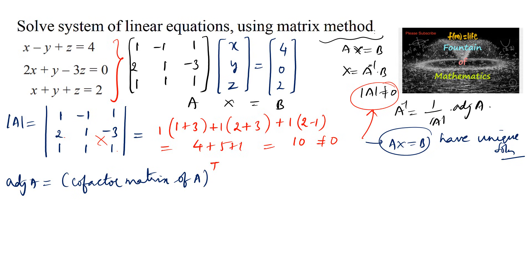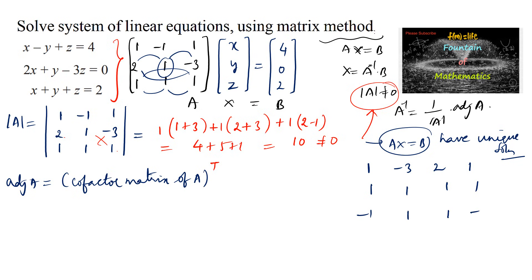Using the shortcut method for cofactors, we take elements from the second row and second column starting from element 1. Writing out the extended rows: [2, 1, -3, 2, 1, -3] and [1, 1, 1, 1, 1], then the first row [-1, 1, 1, -1] and back to second row [1, -3, 2, 1], we compute the diagonal products for each cofactor position.